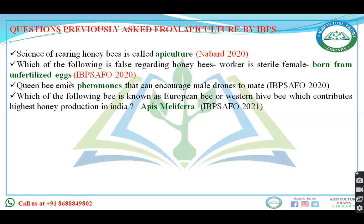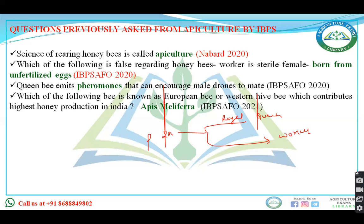When you talk about the queen or the workers in honeybee, they develop from diploid eggs — fertilized eggs, which is 2N. If they feed on royal jelly then it becomes queen, that is fertile female, and if it feeds on bread-like substances then they become worker, or sterile female. Workers are sterile females but they are also born from the fertilized egg. But in the option it stated born from unfertilized eggs, which is incorrect.